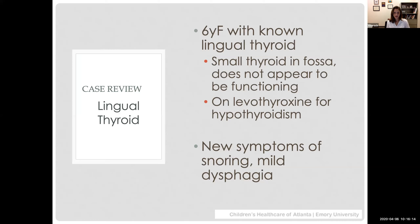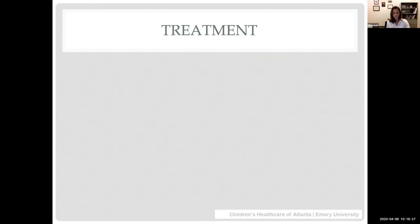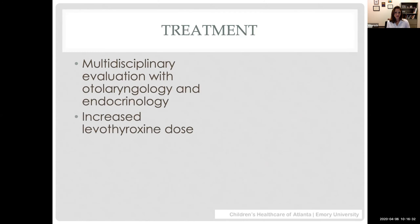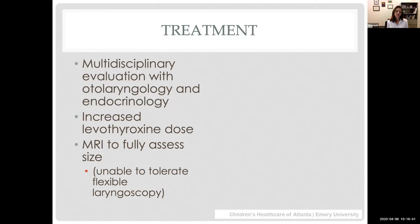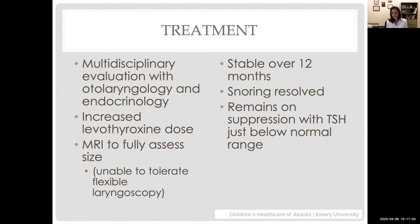This six-year-old had a known lingual thyroid, a small and poorly functioning gland in the fossa, and was already on levothyroxine with new snoring and dysphagia. After multidisciplinary evaluation, we increased her Synthroid dose and obtained an MRI to assess the full extent of the lesion. She was not able to sit for flexible laryngoscopy. On that regimen, the gland size was stable over more than 12 months, her snoring resolved, and she remains on suppression. Her TSH is just below normal but she's not clinically hyperthyroid, and her tonsils have decreased in size, so she appears to be out of the window for requiring surgery.